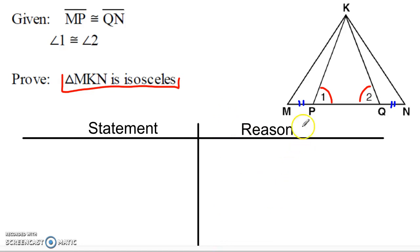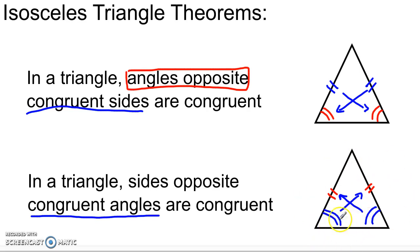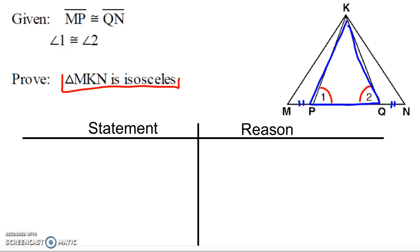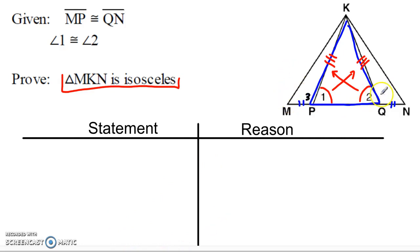I'm going to use the theorem that in a triangle, sides opposite congruent angles are congruent. Focus on triangle KPQ — that's clearly a triangle with two congruent angles. According to this theorem, the sides opposite those angles must be congruent. Looking across from angle 1 and angle 2 inside this triangle, I'll find a pair of congruent sides. If I use angles 1 and 2 to find their supplements — call them angle 3 and angle 4 — since 1 and 2 are congruent, their supplements will also be congruent. That'll give me side-angle-side.